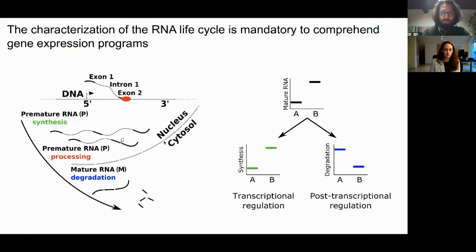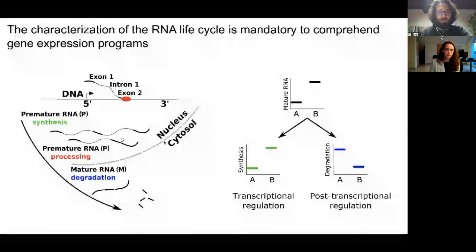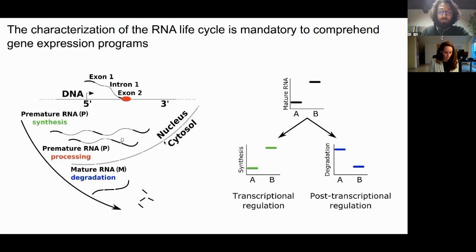Here in this cartoon you see the most important steps of the RNA lifecycle: premature RNA synthesis, processing, and degradation. Nowadays it is quite simple to collect information about RNA levels inside the cell with next-generation sequencing platforms. However, these data alone are not enough to really understand gene expression programs. For instance, if we see an increase in mature RNA expression between two conditions, we are tempted to conclude there is transcriptional induction. However, the same result can be due to a modulation of transcript stability — a very different biological outcome. So characterization of the entire RNA cycle is mandatory to truly study gene expression programs.